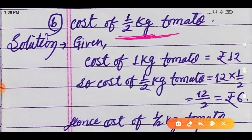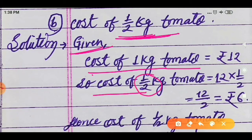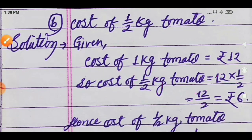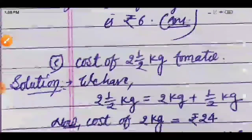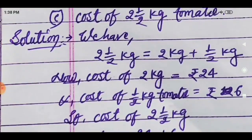The second question is: find the cost of half kilogram of tomato. Using the unitary method, the cost of 1 kilogram tomato is 12 rupees. Cost of half kilogram equals 12 into 1 upon 2, which gives 12 upon 2, equal to 6 rupees. So half kilogram of tomatoes costs 6 rupees.